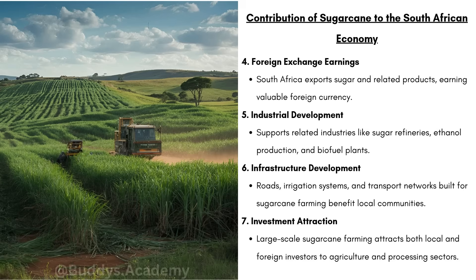Sugarcane also earns foreign exchange — South Africa exports sugar and related products, earning valuable foreign currency, which helps stabilize the economy. There is also industrial development: sugarcane supports related industries like sugar refineries, ethanol production and biofuel plants, because sugarcane is not only used to produce sugar but ethanol as well. Additionally, infrastructure development — roads, irrigation systems and transport networks built for sugarcane farming benefit local communities. Roads built to transport the sugarcane help the entire community.